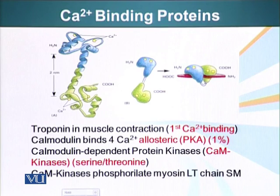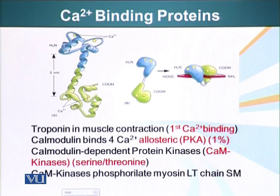One of the things calmodulin does is activate an enzyme or class of enzymes called calmodulin-dependent protein kinases, or CAM kinases. These kinases add a phosphate group to substrate proteins, specifically to serine and threonine residues in the protein molecule. CAM kinases also phosphorylate the light chain of myosin in smooth muscle cells, which also causes contraction.